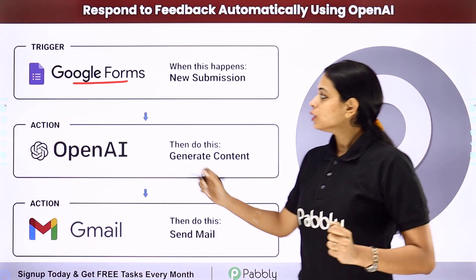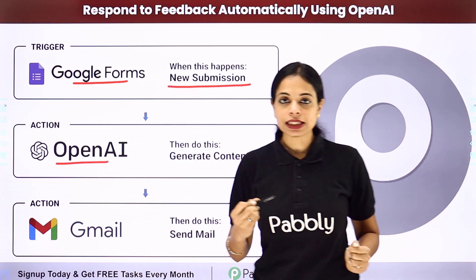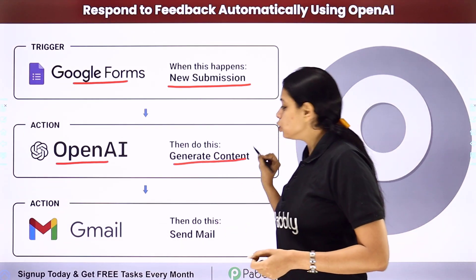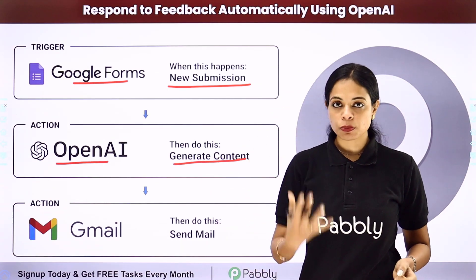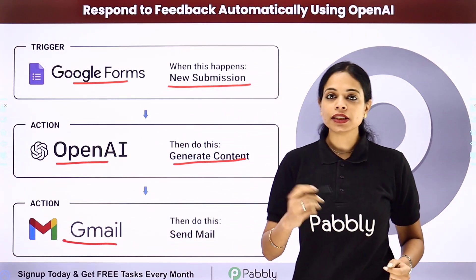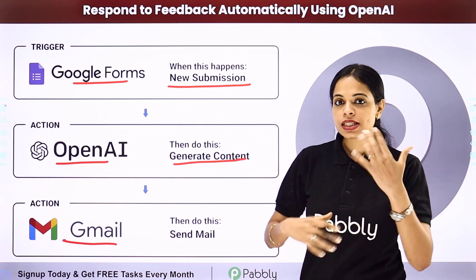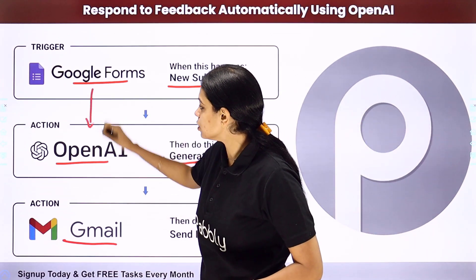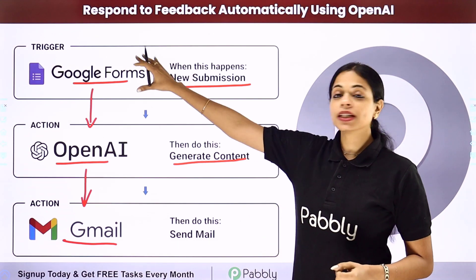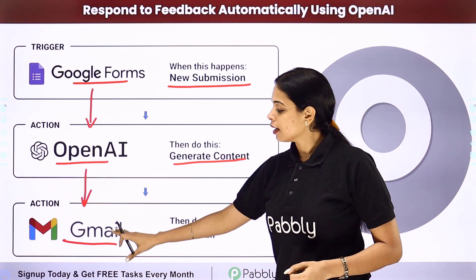How would you do that? As soon as you receive a response, with the help of OpenAI — an artificial intelligence and deployment company that helps in generating human-like content — it would be able to generate a reply to the feedback, and then through Gmail a mail should be sent to the person who submitted the form. For this there has to be some integration between these applications, and the same can be done using Pabbly Connect. Your trigger application would be Google Forms and your action applications would be OpenAI and Gmail.